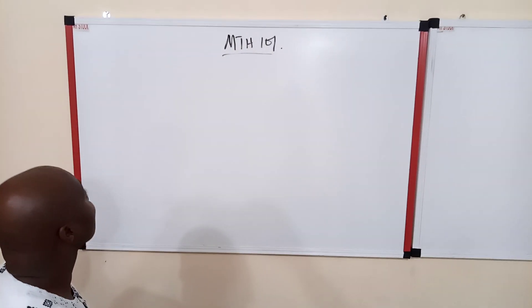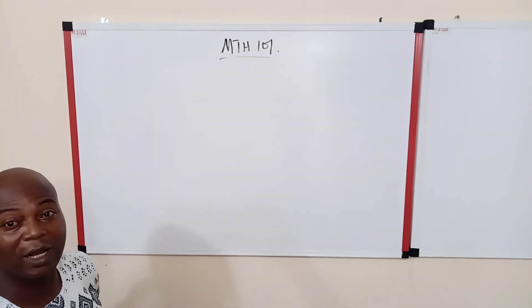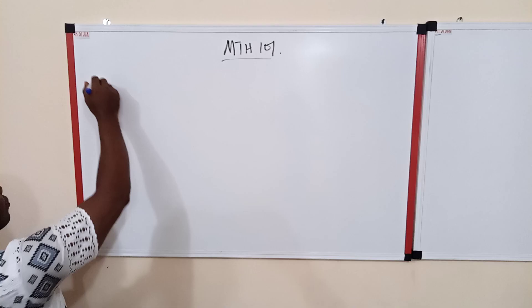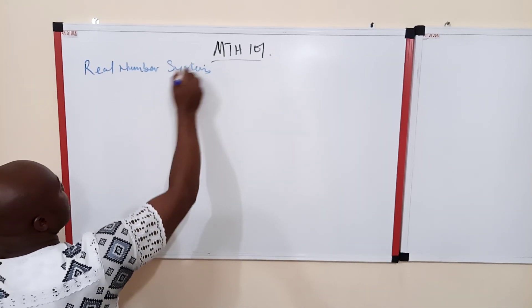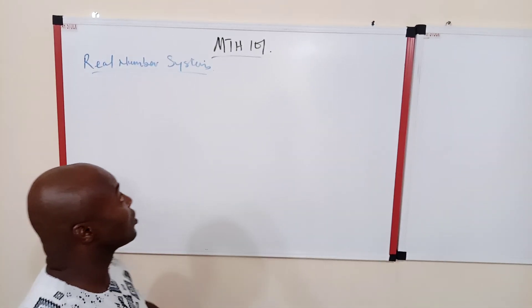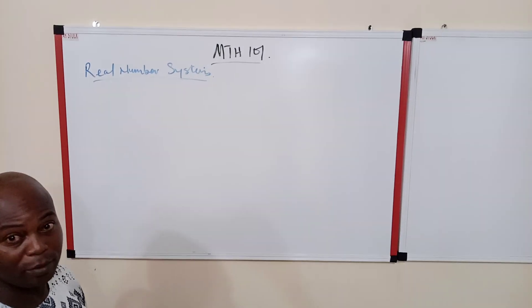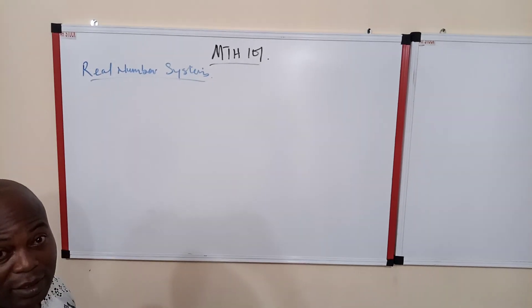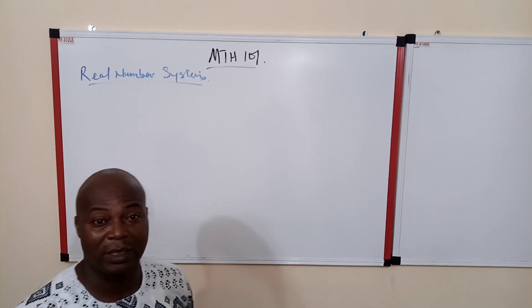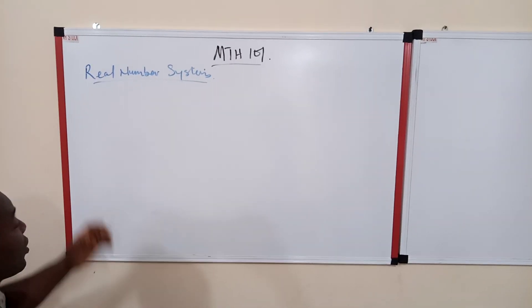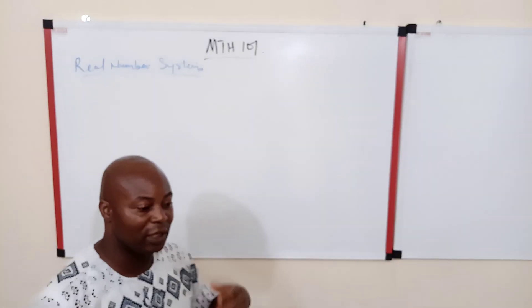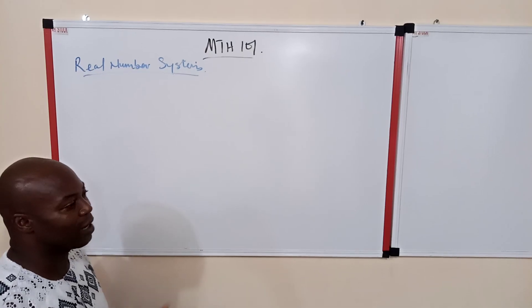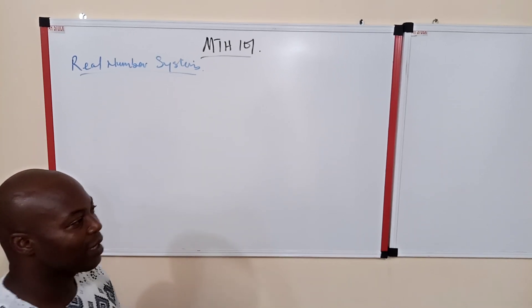Welcome to our next class as we continue with our real number system. As we have stated earlier, any number that we can think of outside the complex number is called the real number. The elementary properties of all sets of numbers make up the real number system. In our previous class we talked about the natural number, which is a set of counting numbers. Now the real number system started from the notion of number, where we began to consider things that are finitely countable.